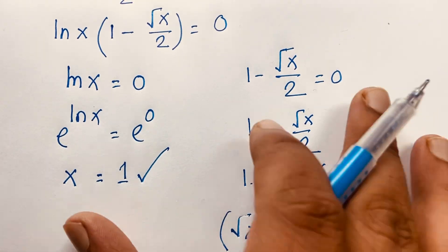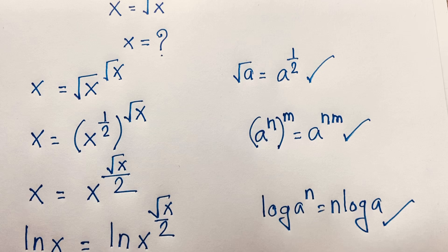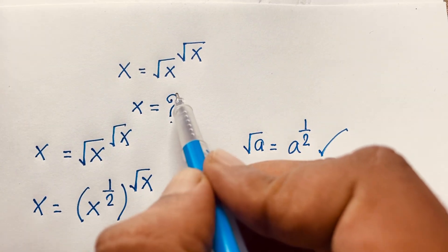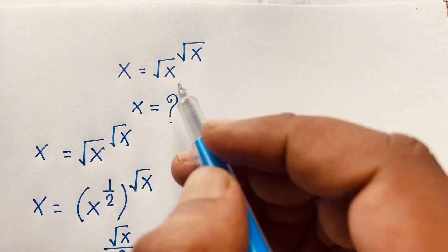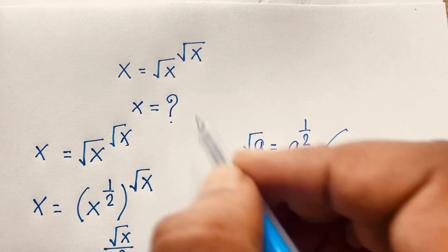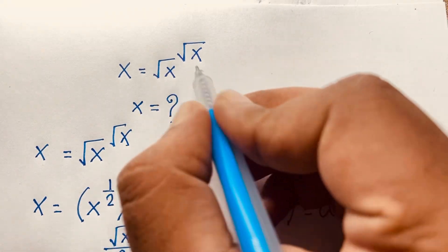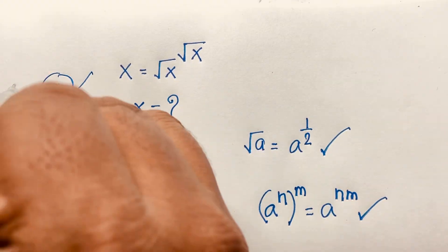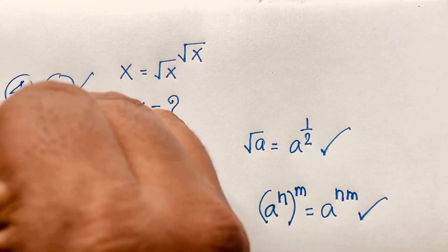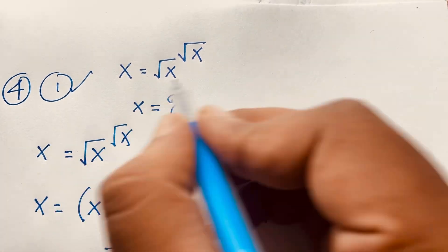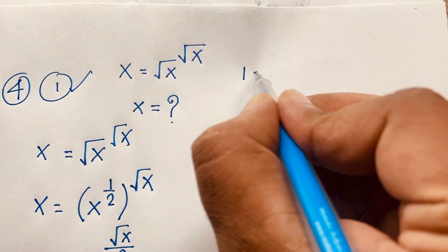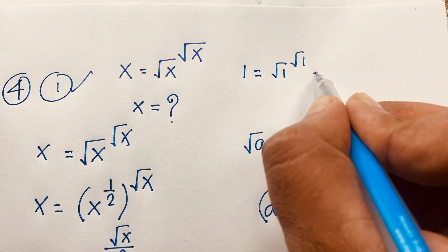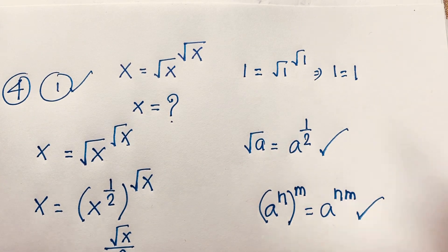So we find our final answers: x equals 1 and x equals 4. Let's verify. The original question is x equals square root x to the power square root x. If we take x equals 1, then 1 equals square root 1 to the power square root 1, which gives 1 equals 1. This checks out.